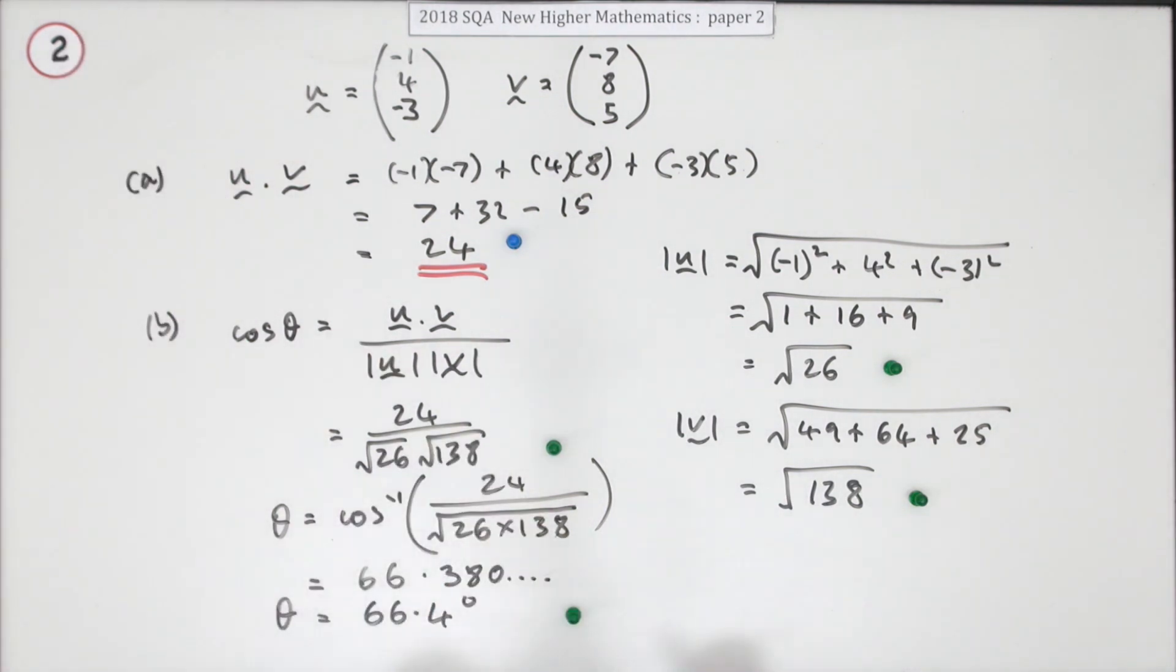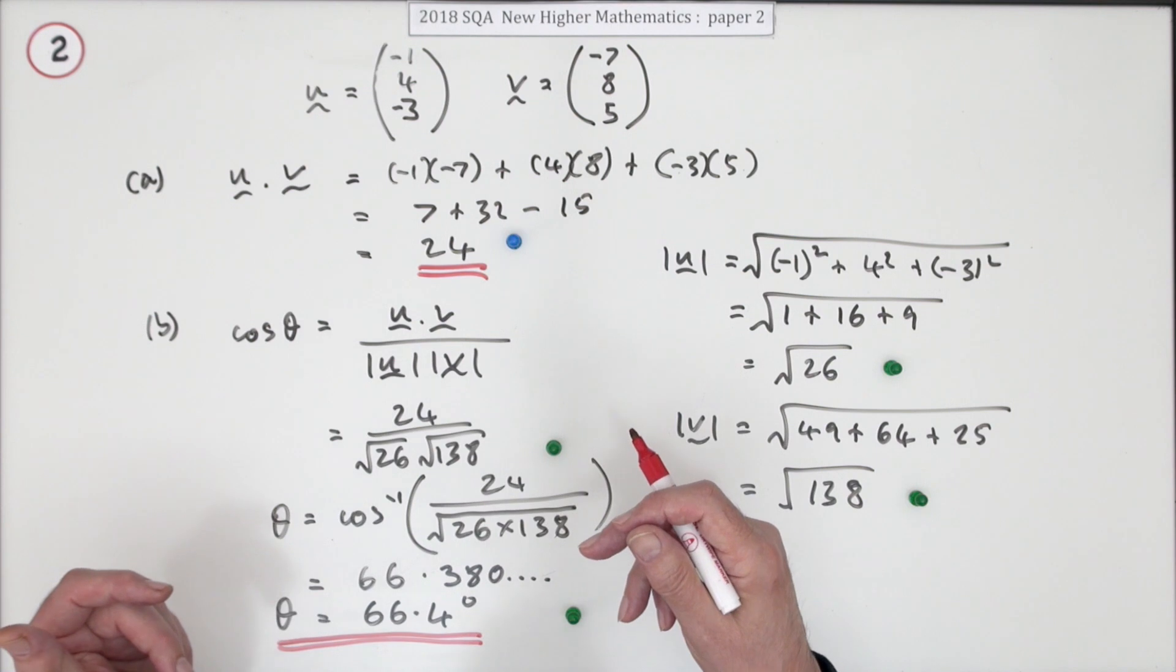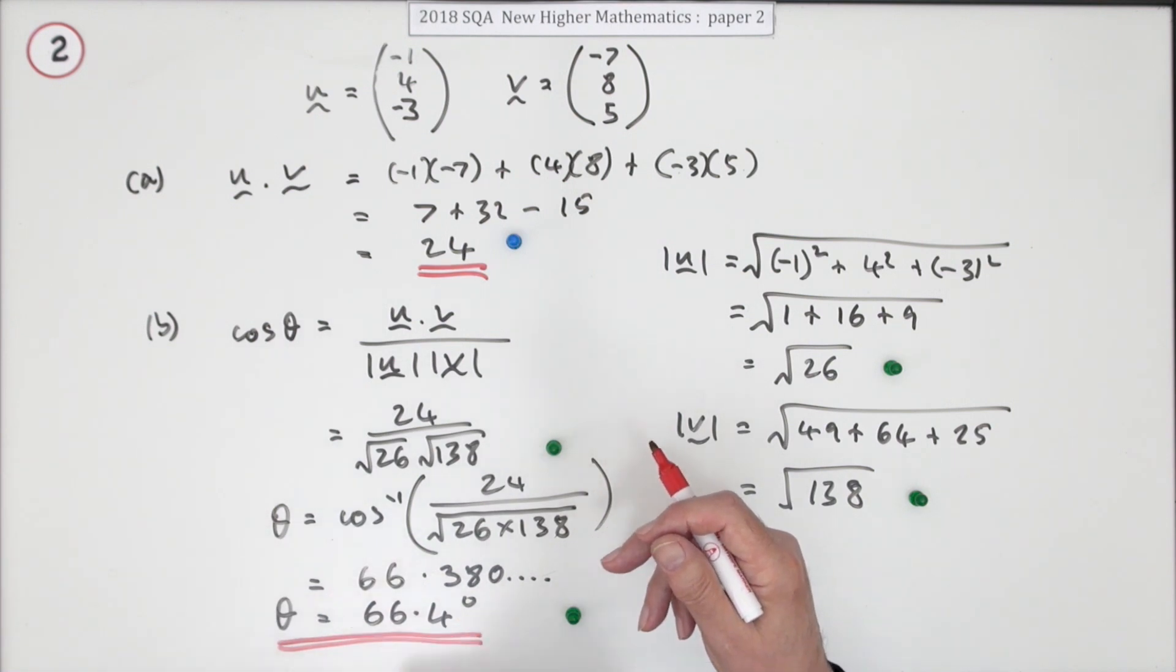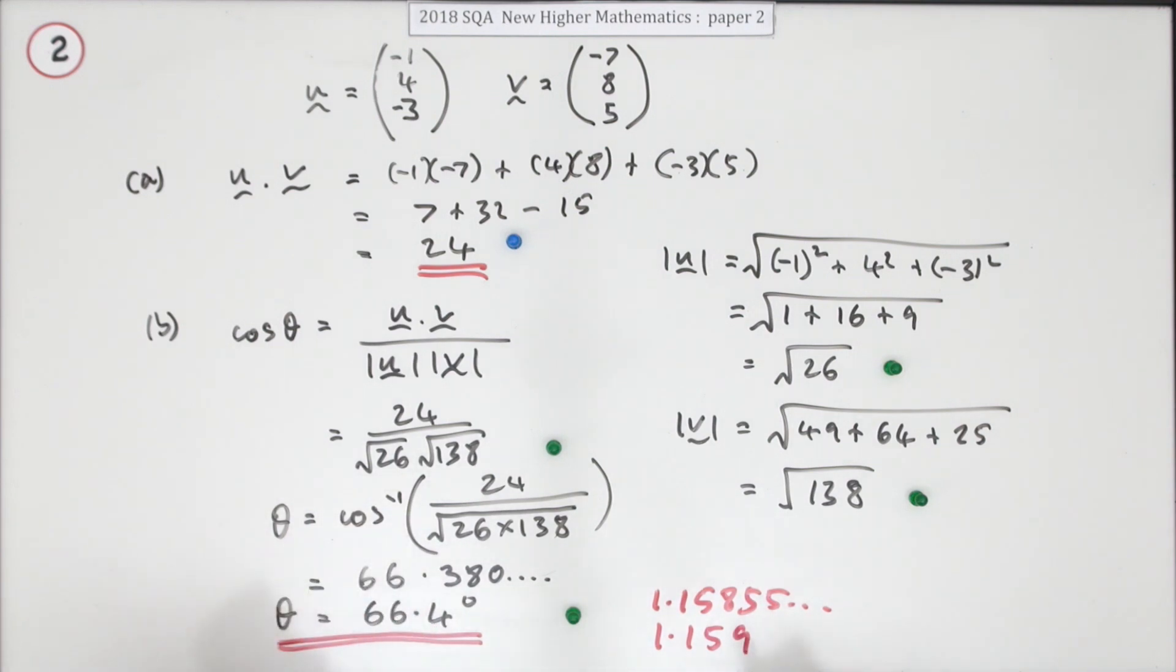And doing that gets the last mark. You can if you wish put that into radians by setting your calculator in radians, but why would you do that? Unless of course it was already accidentally set into radians, in which case you would just put down 1.5855 and so on. They've accepted 1.16, but I'm going to put 1.159.